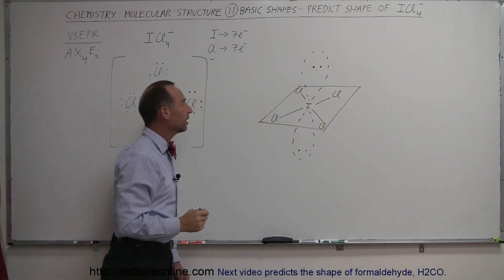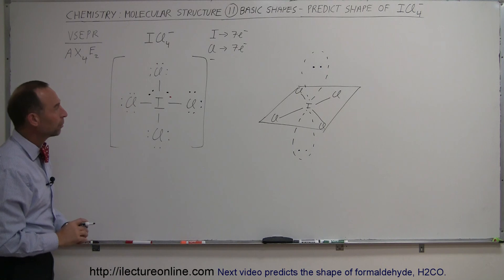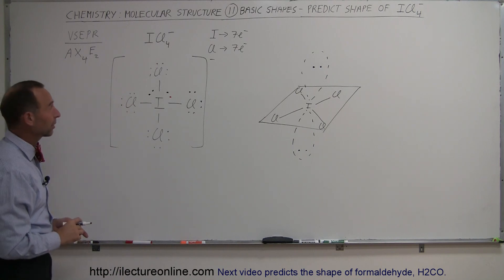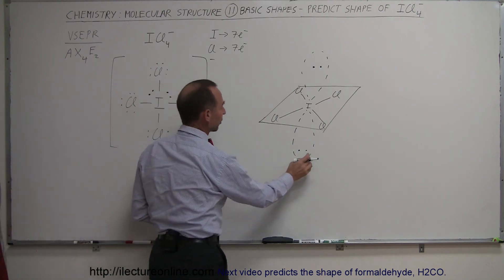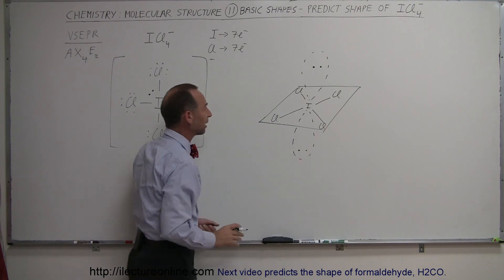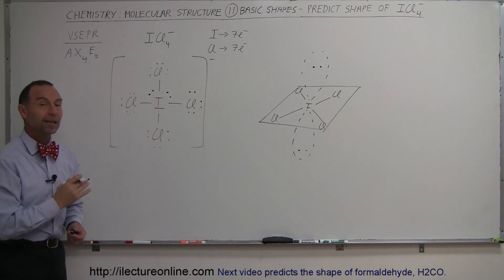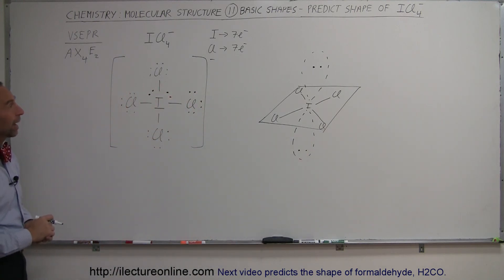And that looks like an octahedral shape. So that would be the general shape of that particular ion. Of course it would have one extra electron, so it would be negatively charged. And that's the shape of iodine tetrachloride ion.